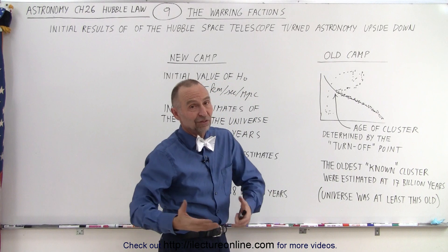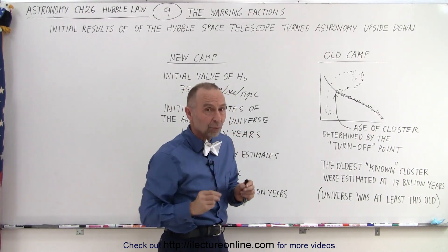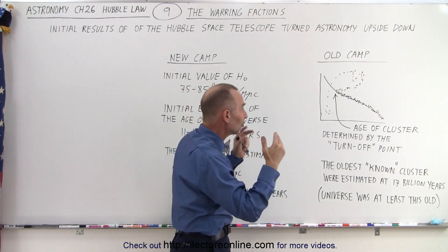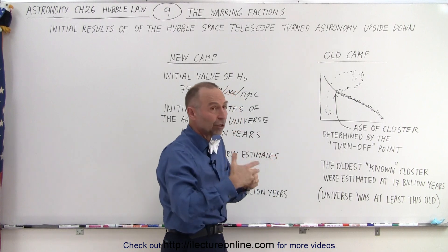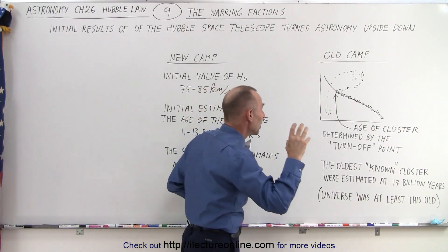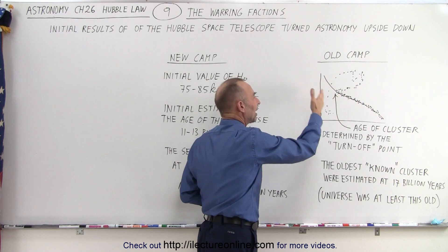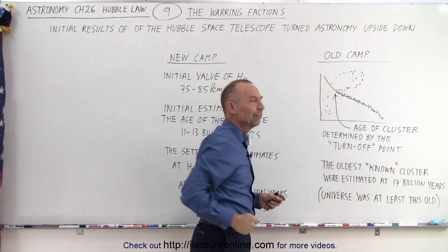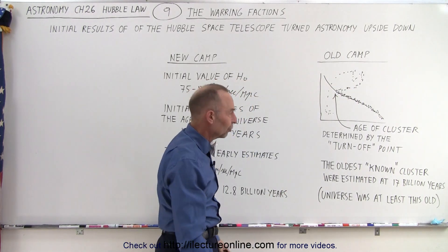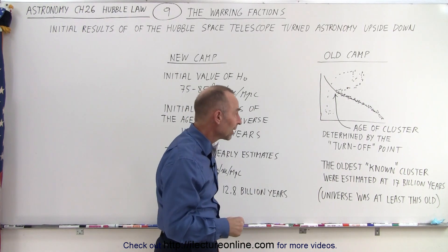The turnoff point is easy to obtain by just looking at a bunch of stars within the cluster, and by putting the results — the color, the temperature, the spectral type, and so forth — on the HR diagram. And voila, we have the age of the cluster. It seems like a pretty straightforward way of doing things.